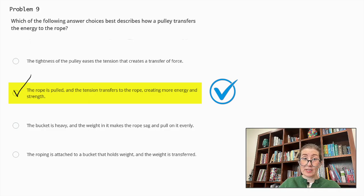Why are the others incorrect? From the top, this is incorrect because the pulley itself doesn't ease tension. This one here, the bucket is heavy and the weight in it makes the rope sag. This is incorrect because it does not describe the function of the pulley in transferring energy or force. And the last one is incorrect because it does not explain how the energy or force is transferred through the pulley system.